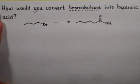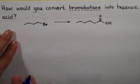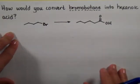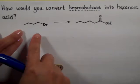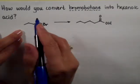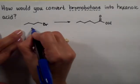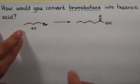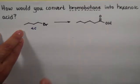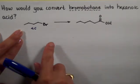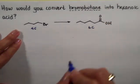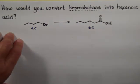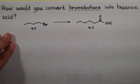Another problem, and this one's a beauty. Let's count carbons again because we need to convert bromobutane — so I have four carbons right here — into hexanoic acid. So I need to go from four carbons to six carbons.